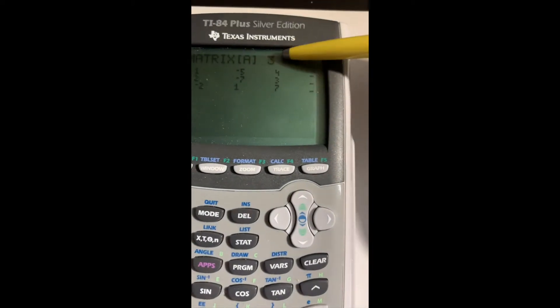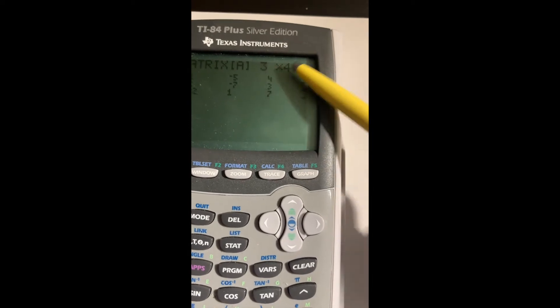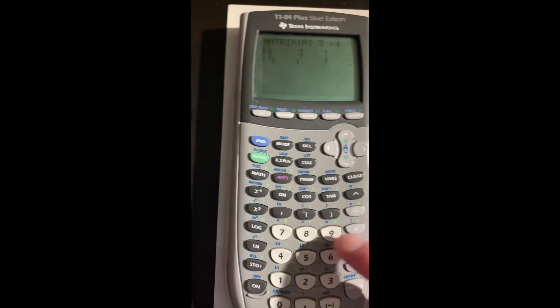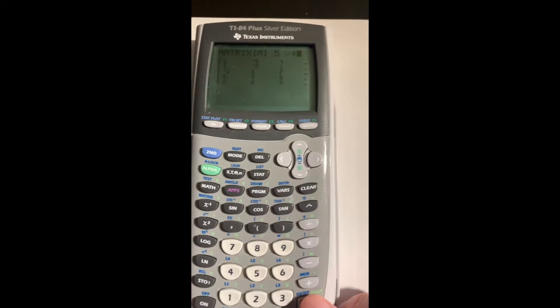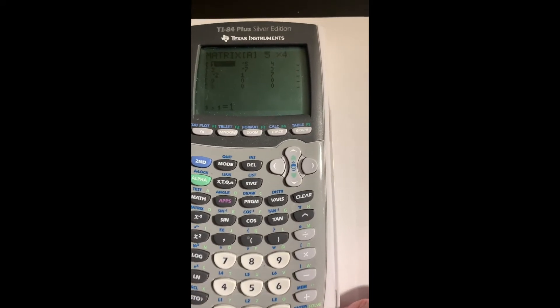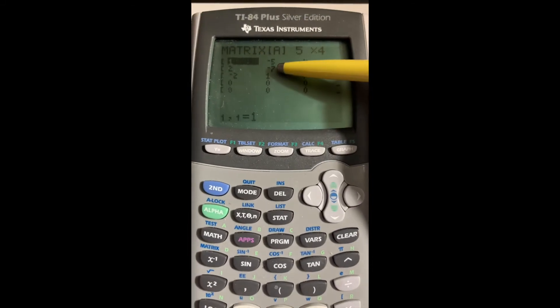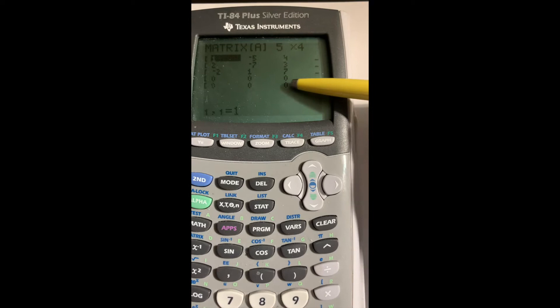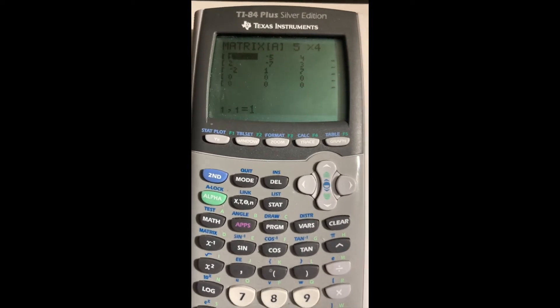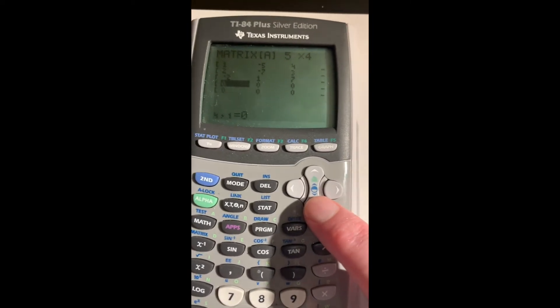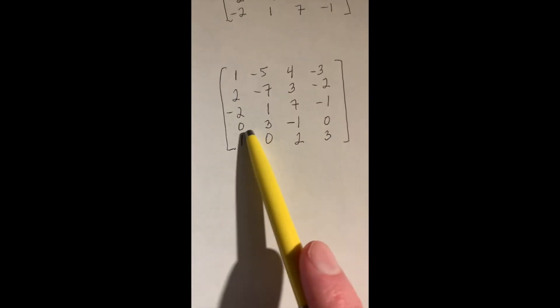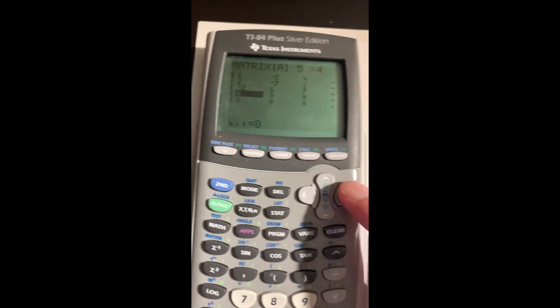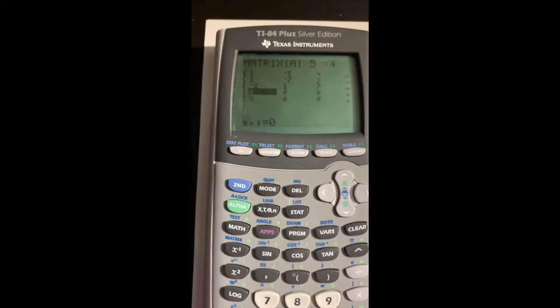Up here, instead of 3x4, I want it to be a 5x4. So I'm just going to overwrite that 3 with a 5, leave the 4. And nicely, it keeps all the entries that were already there and adds two rows at the bottom with zeros as placeholders.